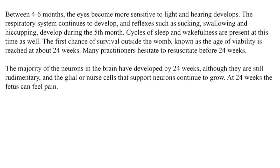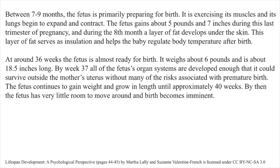The first chance of survival outside the womb, known as the age of viability, is reached at about 24 weeks. Many practitioners hesitate to resuscitate before 24 weeks. The majority of the neurons in the brain have developed by 24 weeks, although they are still rudimentary, and the glial or nurse cells that support neurons continue to grow. At 24 weeks, the fetus can feel pain. Between seven to nine months, the fetus is primarily preparing for birth. It is exercising its muscles, and its lungs begin to expand and contract. The fetus gains about five pounds and seven inches during this last trimester of pregnancy. During the eighth month, a layer of fat develops under the skin, serving as insulation and helping the baby regulate body temperature after birth.